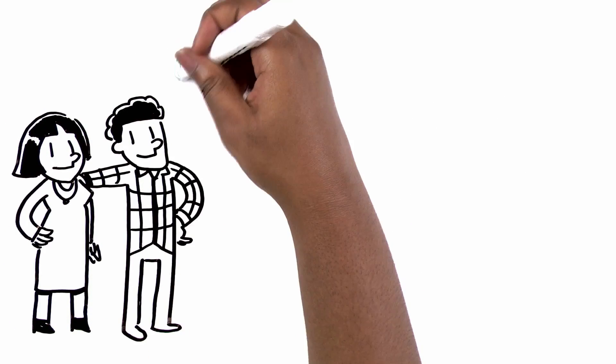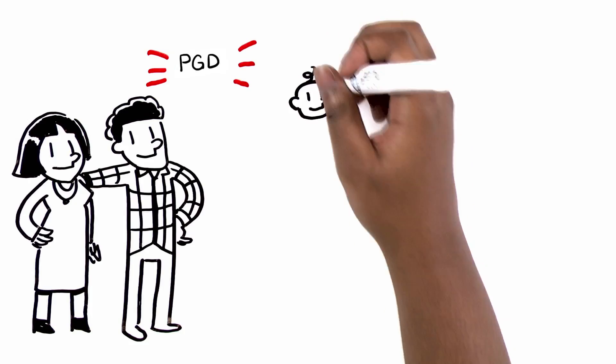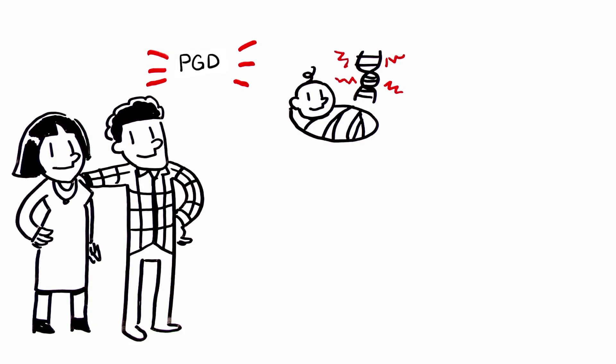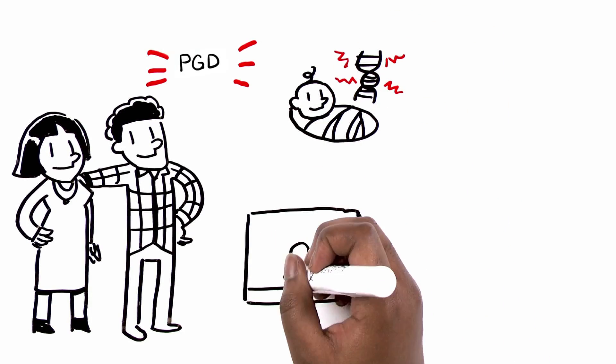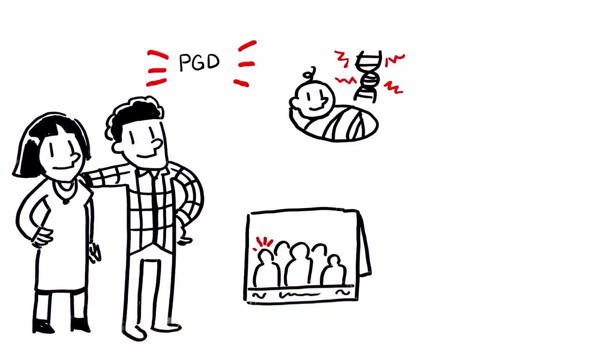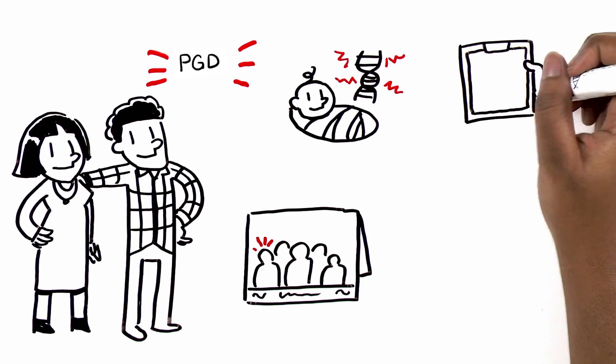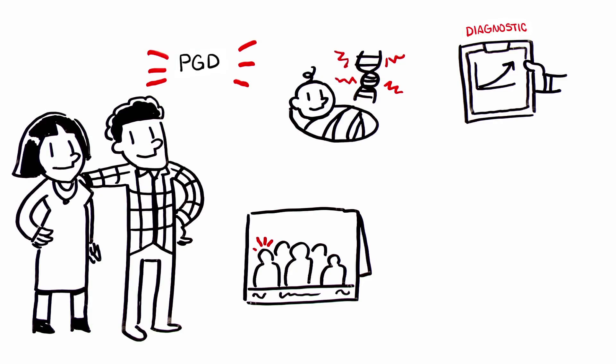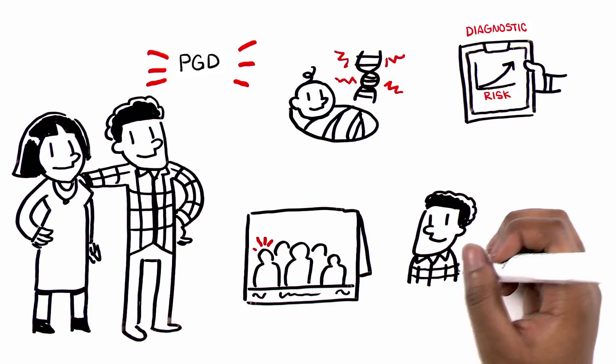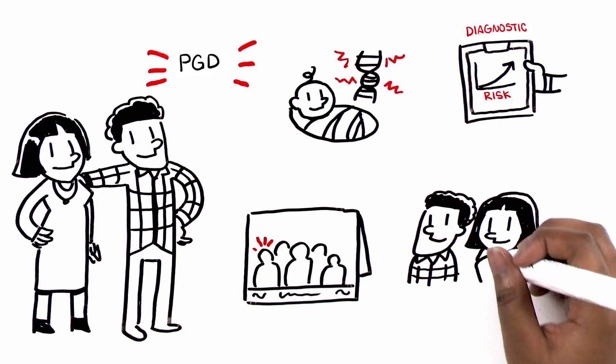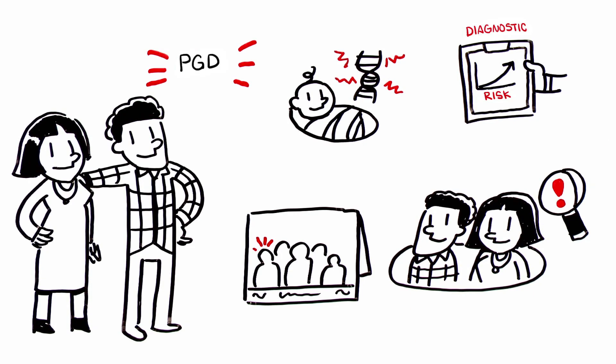You might be considering PGD if you have a child who has an inherited genetic disorder, or if you've been diagnosed with a hereditary condition. Perhaps a member of your family has been diagnosed with a hereditary disorder, one that you are at risk of passing down to your children. Or if you and or your partner have been identified as carriers of a genetic disease.